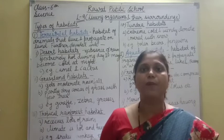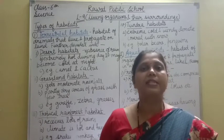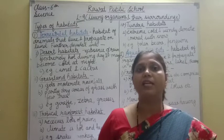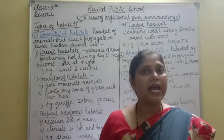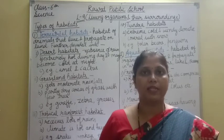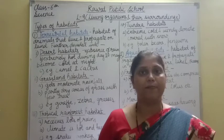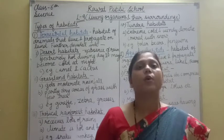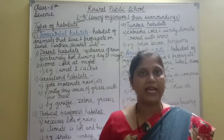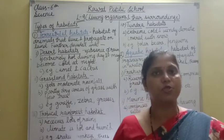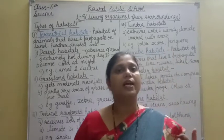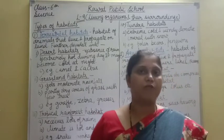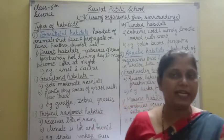Aquatic habitat means plants and animals that live in water. And aerial habitat — जो sky का use करते हैं, mostly animals जो उड़ते हैं, like birds — that comes under the aerial habitat. So let's study these different types of habitats in detail today.